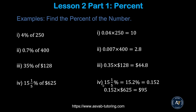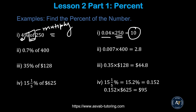Now we'll find the percent of a number. For example: four percent of 250. The keyword 'of' means multiply. So convert the percent to decimal first — move two decimal places — giving 0.04, then multiply: 0.04 times 250 equals 10. Similarly, for 0.7 percent of 400, move two decimal places to get 0.007, then multiply — that gives you 2.8.